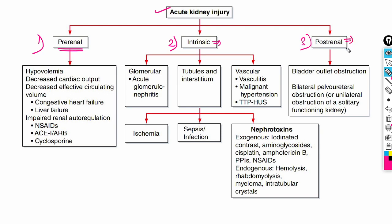Pre-renal causes include hypovolemia, decreased cardiac output, decreased effective circulating volume due to congestive heart failure or liver failure, and impaired auto-regulation due to NSAIDs which inhibit prostaglandins, ACE inhibitors or ARBs which inhibit angiotensin 2, and cyclosporine and other drugs. Intrinsic renal failure can involve glomerular, tubular, interstitial, or vascular components.